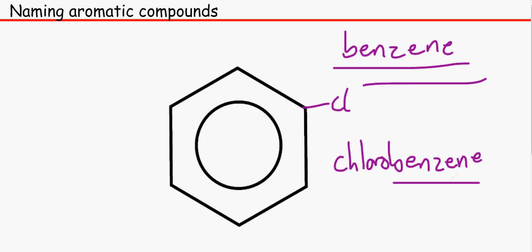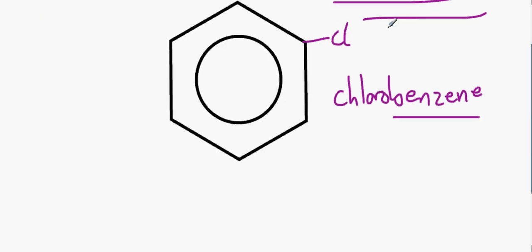That's a general rule. So let's say for example I changed this to bromine, that will end up as bromobenzene. If I ended up with fluorine, that will end up with fluorobenzene.